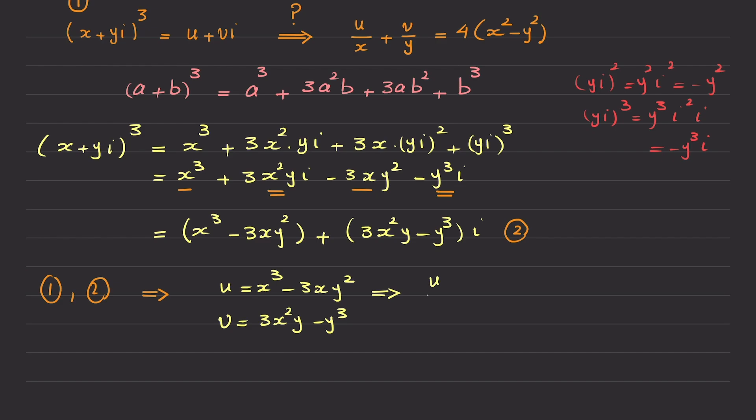So it becomes u over x equals to, I have two terms to divide by x. When I divide this by x, I get x². And when I divide the second term by x, I just simply get 3y². And that is also true for the second one.